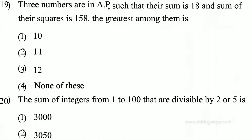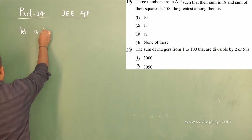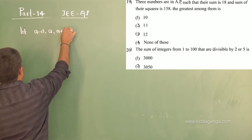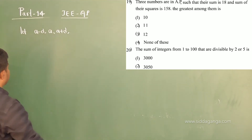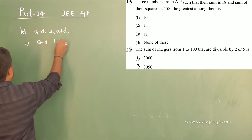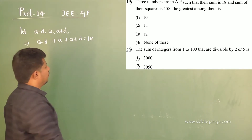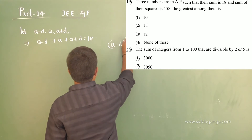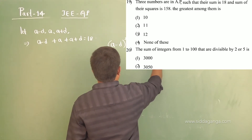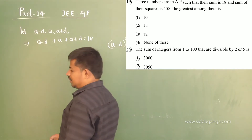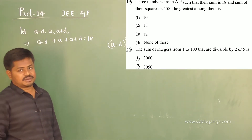Question number 19: three numbers are in AP such that their sum is 18 and the sum of their squares is 158. Find the greatest among them. Let me take the three numbers as (a minus d), a, and (a plus d), where a is the middle term and d is the common difference. The sum is (a minus d) plus a plus (a plus d) equals 18, and the sum of squares is (a minus d)² plus a² plus (a plus d)² equals 158.